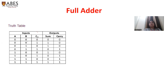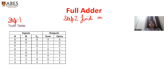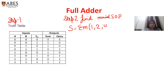Zero plus zero plus zero gives you zero and carry zero. Zero plus zero gives you zero. Zero plus one gives you sum and carry zero. So step one is to make the truth table of the full adder. And after making the truth table, we will find the minimal SOP. In the sum column, sum is the function of summation - we will get one at positions one, two, four and seven. Similarly, for carry output, carry output is a function where it is one at positions three, five, six, seven.